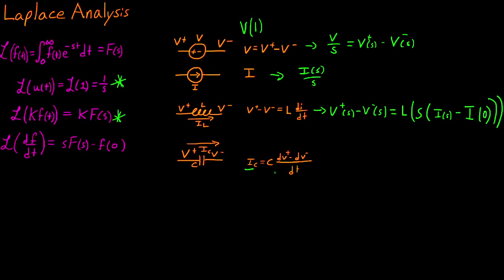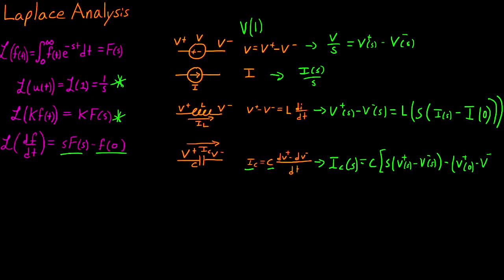For the capacitor, i_C equals the capacitance value multiplied by the derivative of (V+ − V−) with respect to time. To represent that in Laplace domain, I_C(s) = C multiplied by s times the node voltage difference in the s domain, which is V+(s) − V−(s), and then we subtract our initial conditions: minus V+(0) minus V−(0). That is the Laplace domain representation of the capacitor.